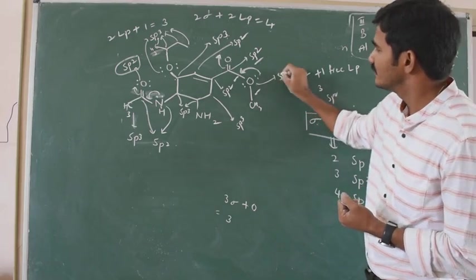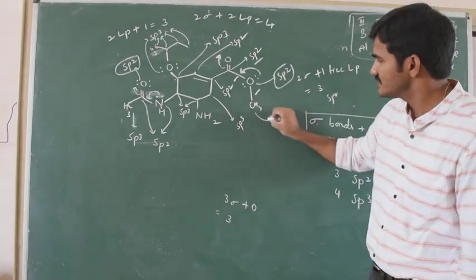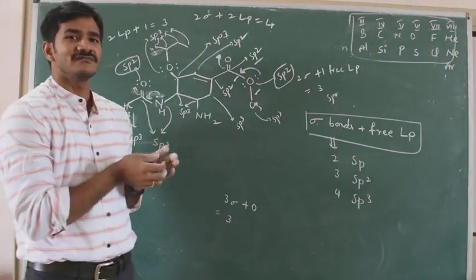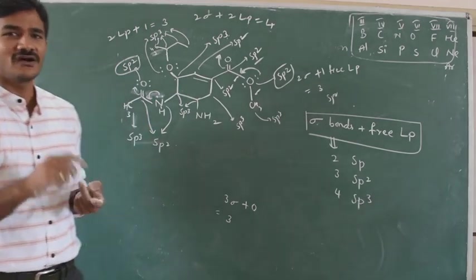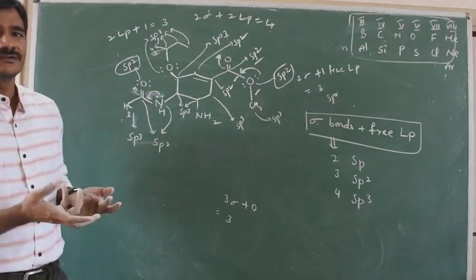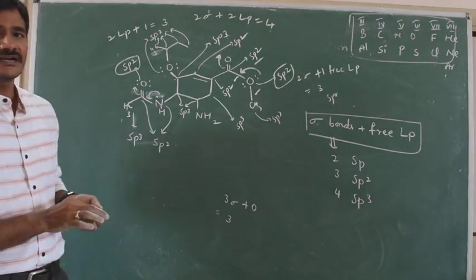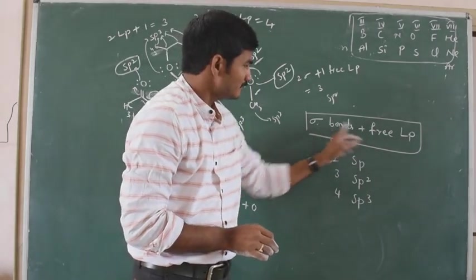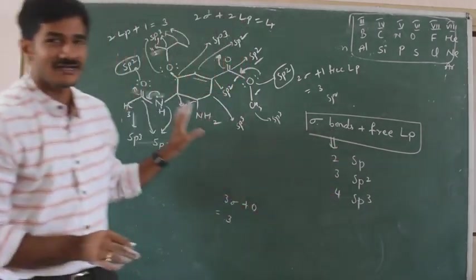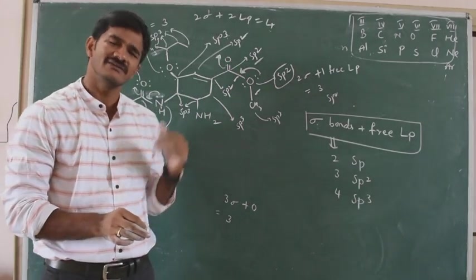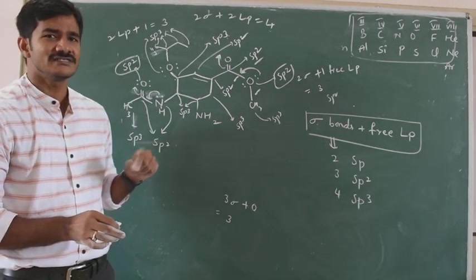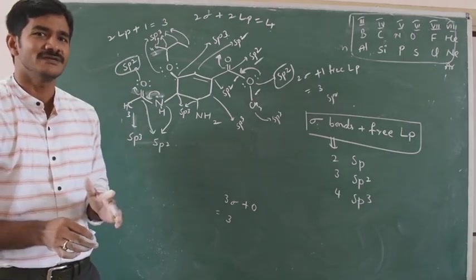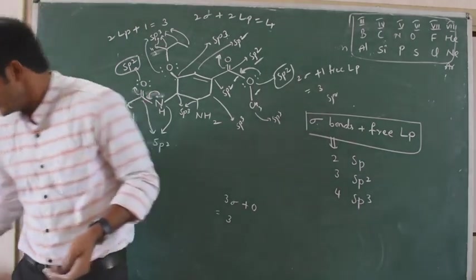To summarize: sigma bonds plus free lone pairs together decide the hybridization of heteroatoms in organic compounds — sum of 3 is SP2, sum of 4 is SP3. Even for carbon, we can use this same method, but the simple trick is: single bonds give SP3, double bonds give SP2, triple bonds give SP. This is how we find hybridization in carbon-containing compounds.